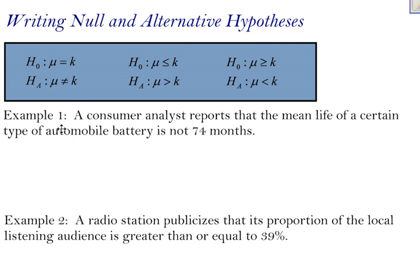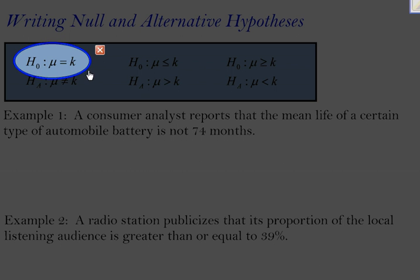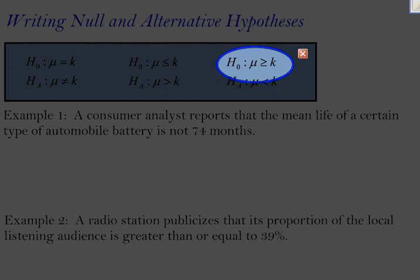Before I get to the examples that I have down here, there are three things, or basically three different ways that your null and alternative hypotheses will look. And I've got all three right here. The first thing that I want to point out is that in your null hypothesis, and by the way, your null hypothesis is the one that has H with a little zero. That's pronounced H-naught.